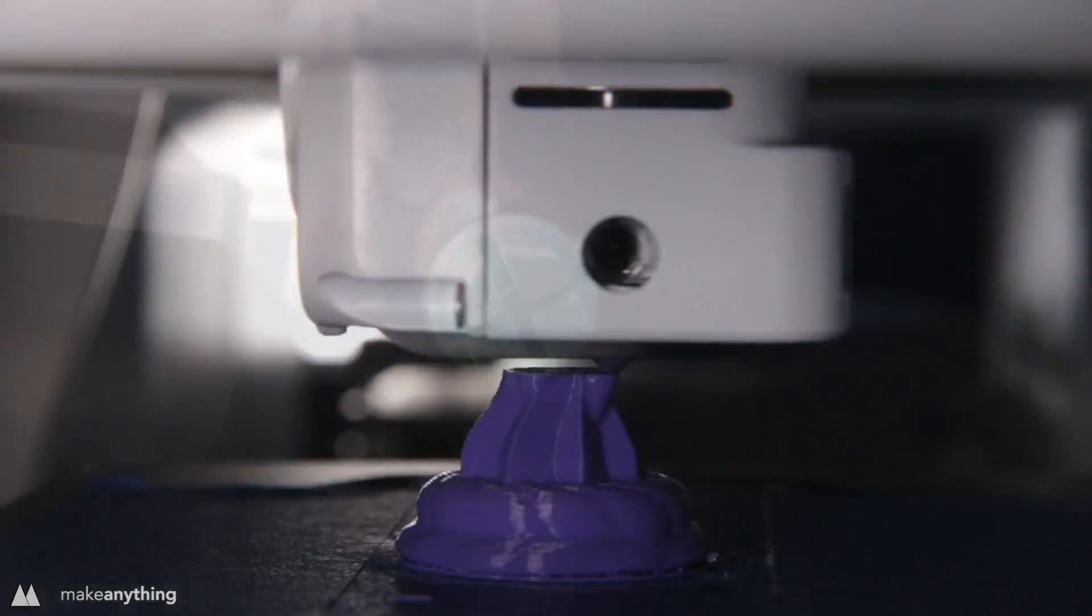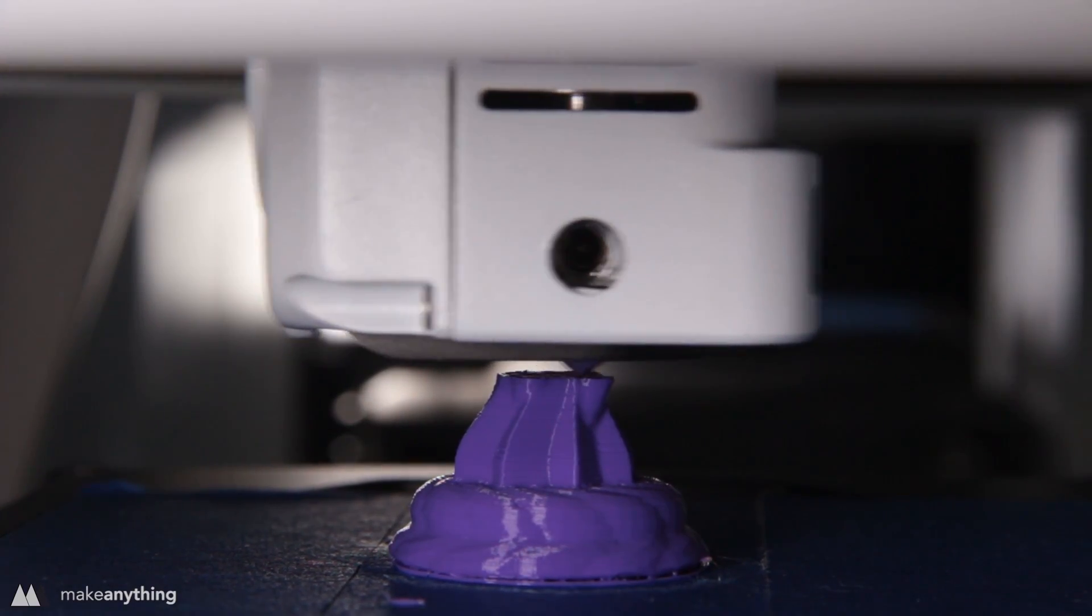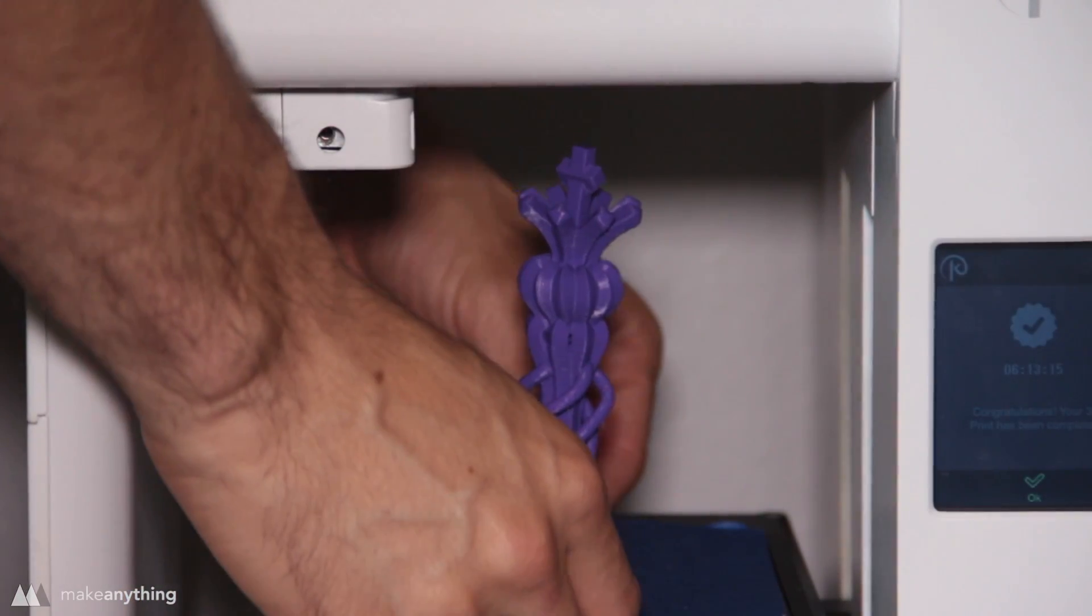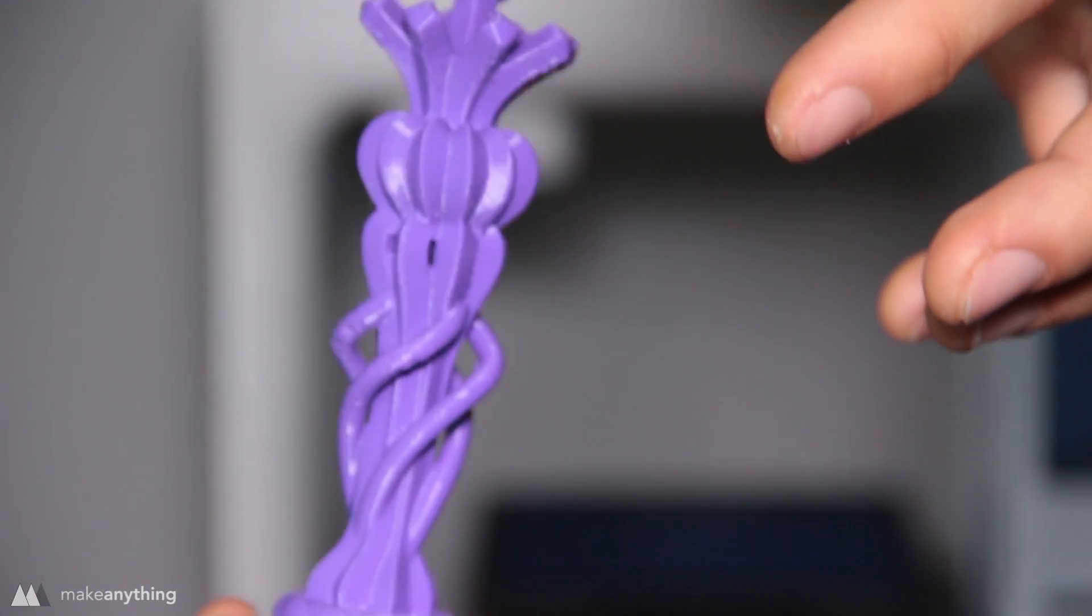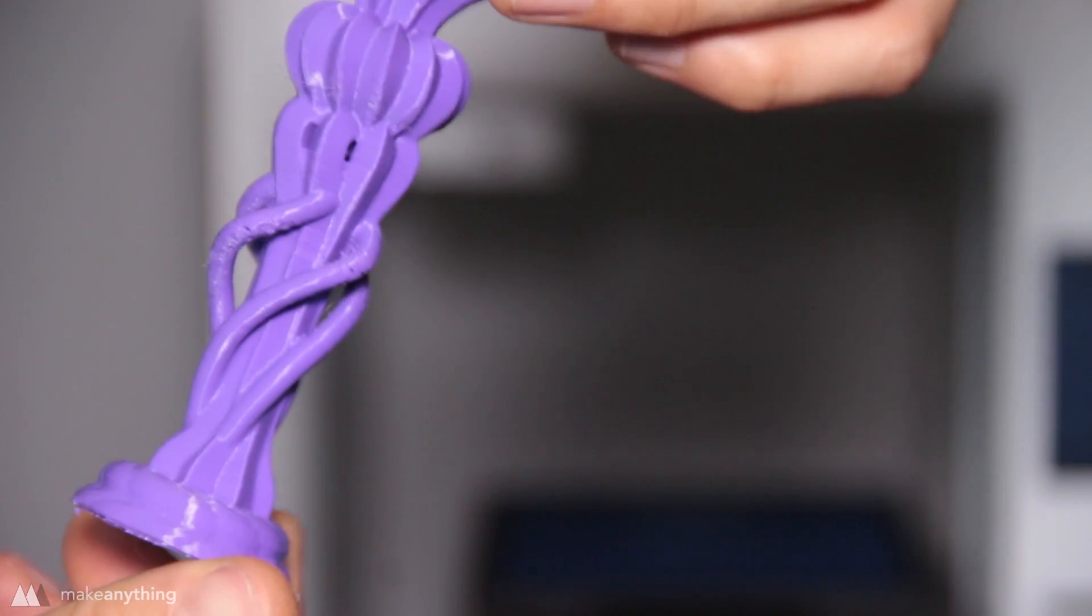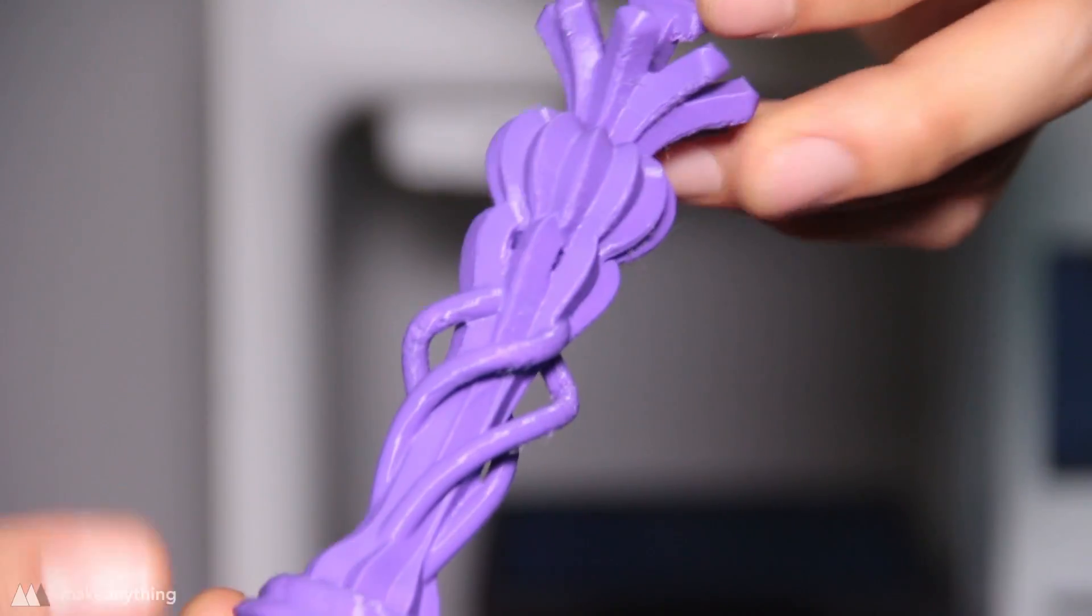With things looking good I decided to try something a bit more challenging. This scaled up version of the king from my VR sculpted chess set. Some of those intense overhangs do get a little bit hairy but overall it's another really great print.